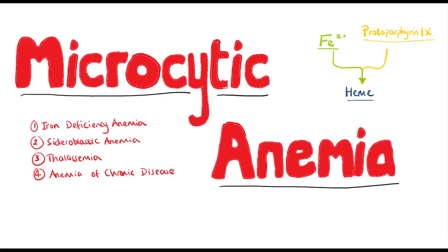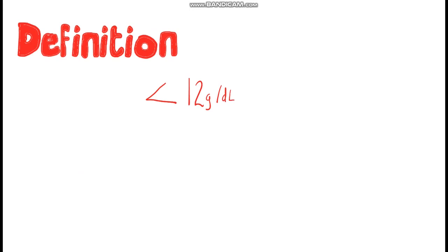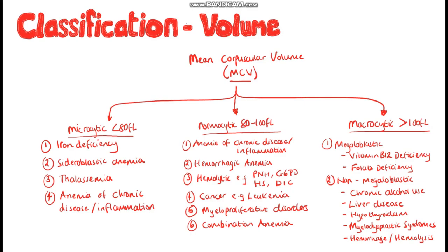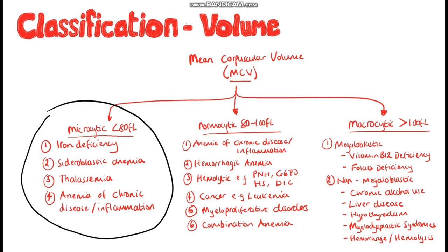If you haven't already seen my video on the classification of anemia, I'd go watch that first because classification is half the battle in learning anemia. Anemia is a condition characterised by low haemoglobin or red blood cell values, less than 12 grams per deciliter in females and less than 13.5 grams per deciliter in males. The different types can be split based on the mean corpuscular volume or MCV into microcytic anemia when below 80 femtoliters, normocytic when between 80 and 100, and macrocytic when above 100 femtoliters. In this video we're going to focus on the microcytic anemias.